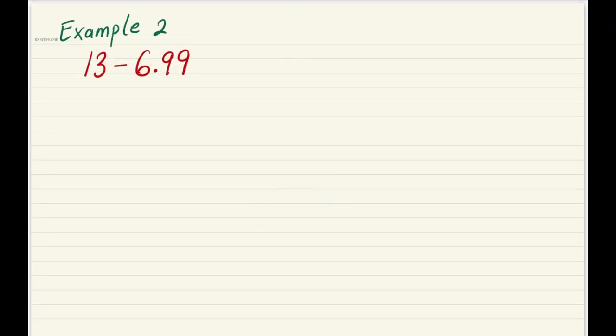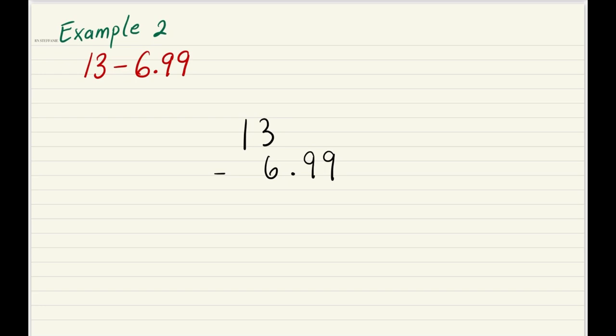For example 2, we have 13 minus 6.99. We're going to remember to bring the decimal point behind the 3 because 3 is the last number in the whole number, which is 13, and bring the placeholder zeros to make the length of both numbers equal. We're going to put another zero here and then start subtraction. Zero minus 9, it's impossible to subtract 9 from zero. So we're going to try to borrow from the next one, and it's another zero. So let's move to the 3. When we borrow from the 3, the 3 becomes a 2.